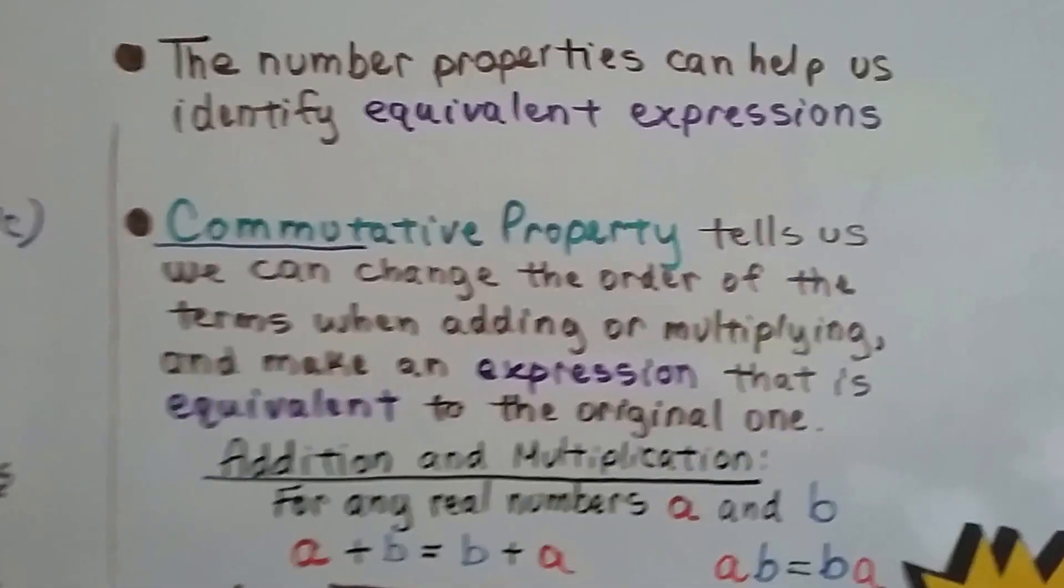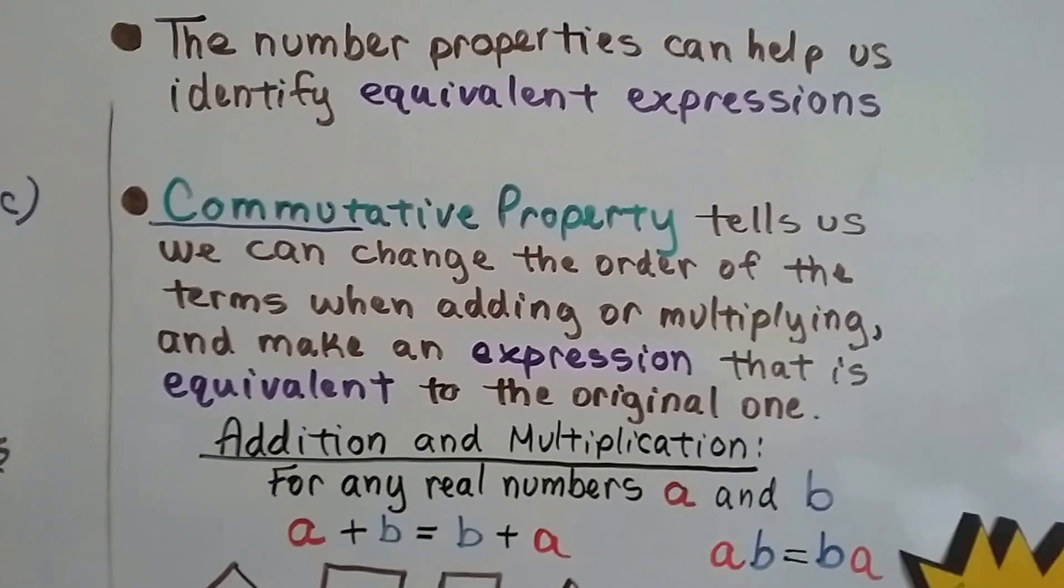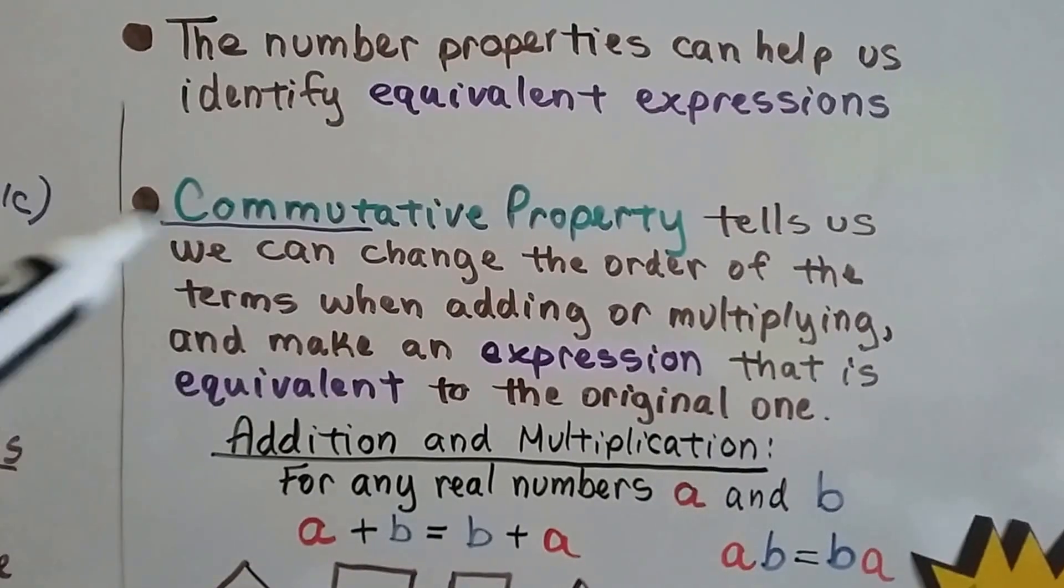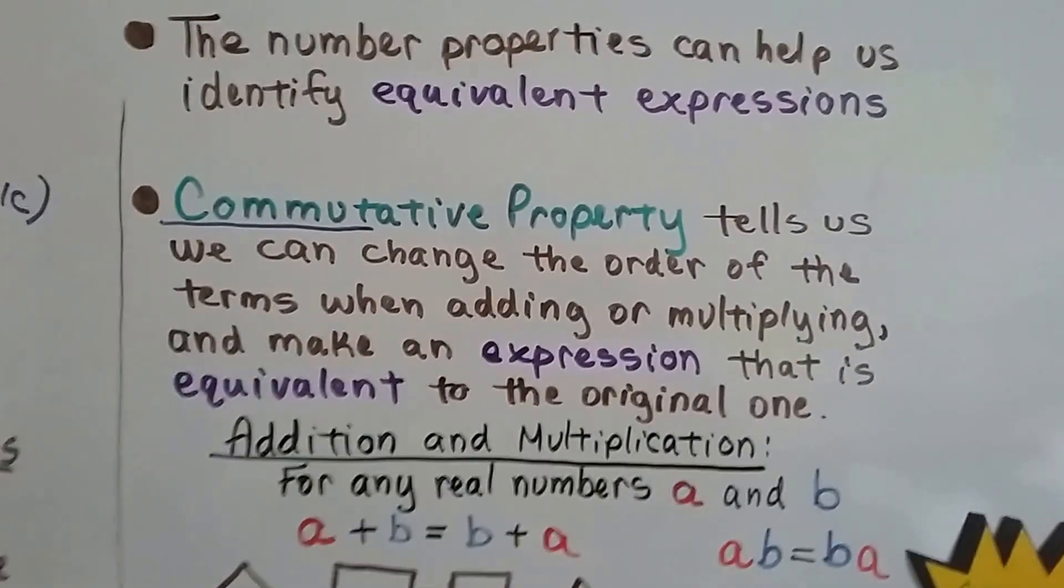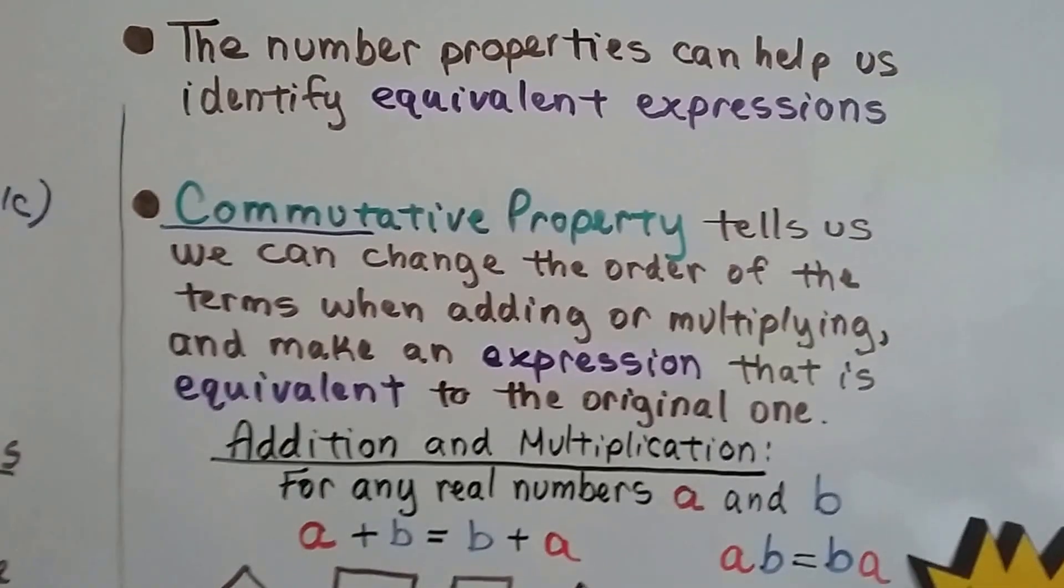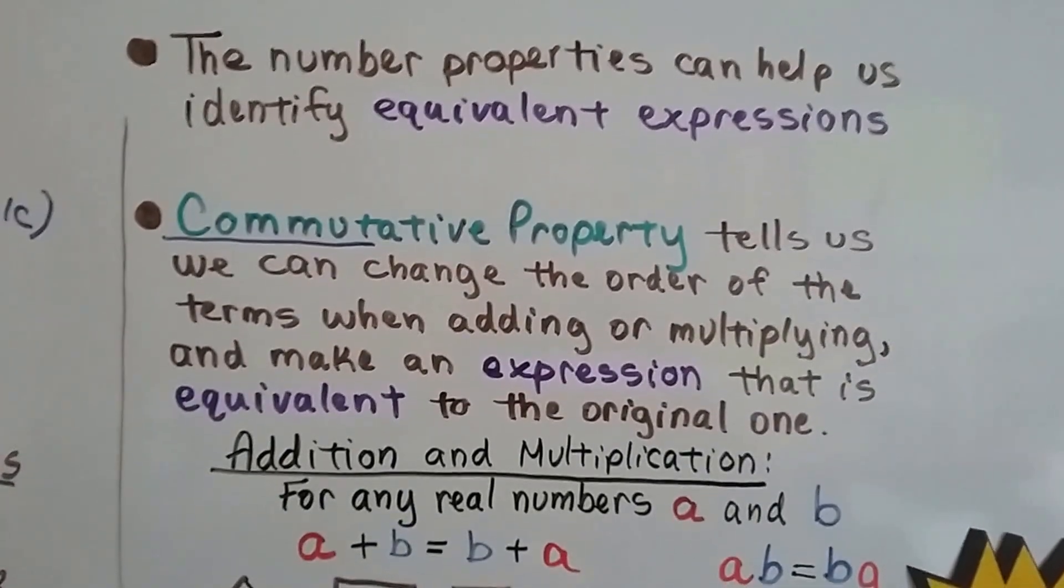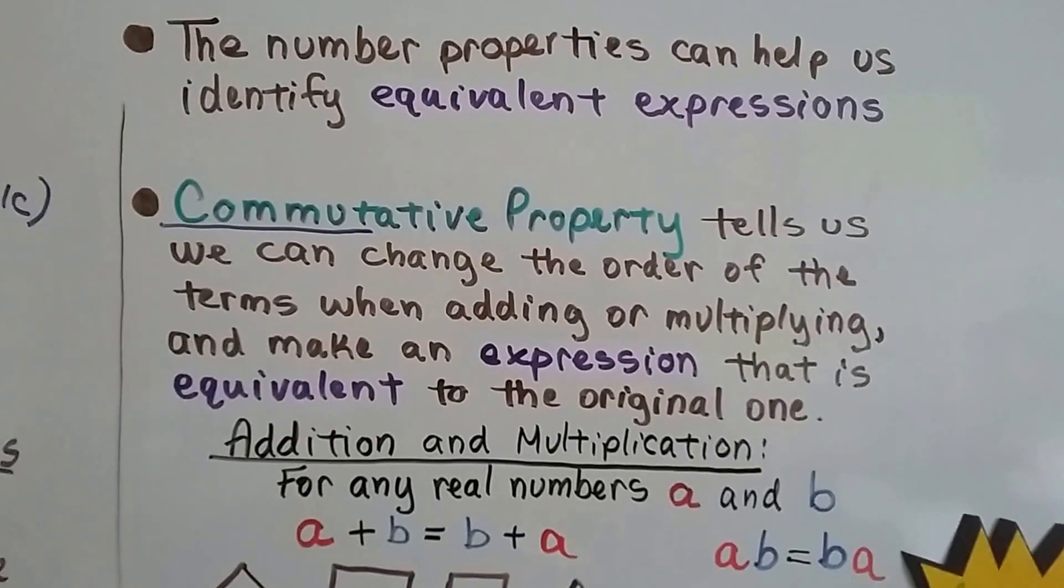The number properties can help us identify equivalent expressions. The commutative property, I want you to remember the word commute, like commuting to work or commuting to school. It's like your distance traveling to school. That tells us that we can change the order of the terms when adding or multiplying.